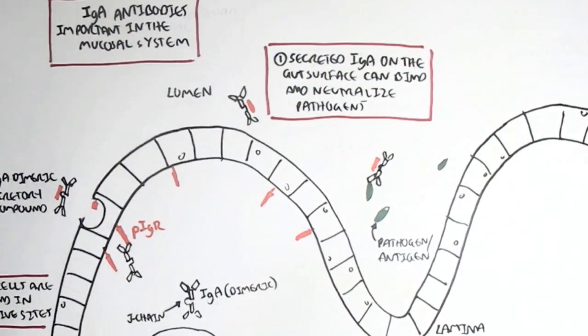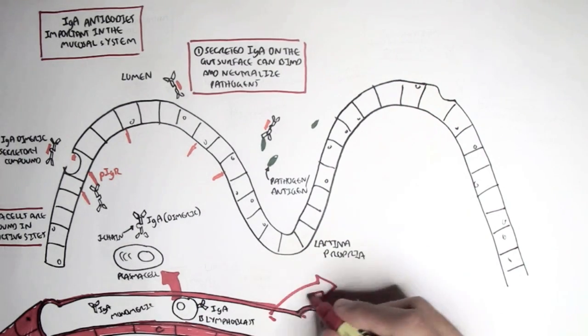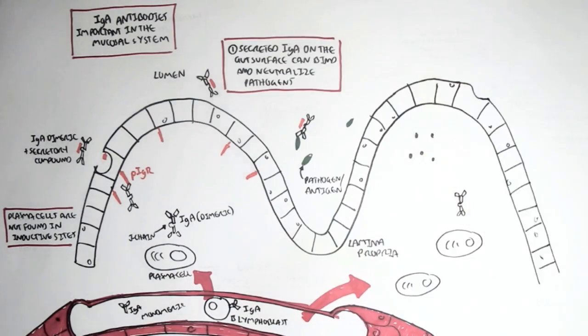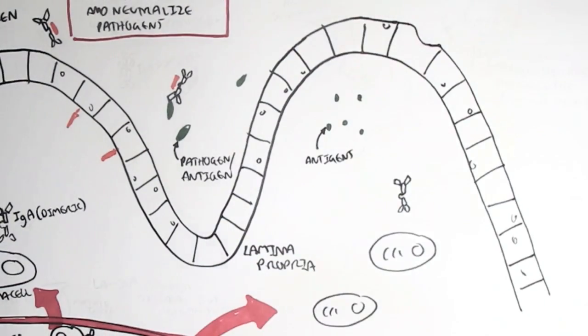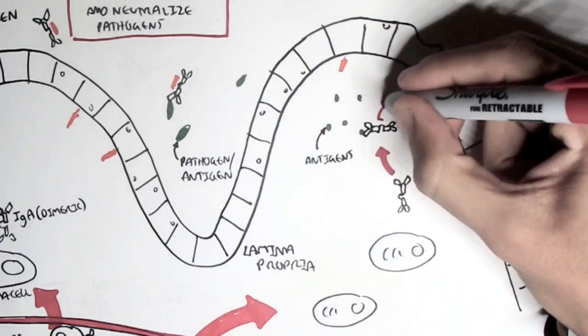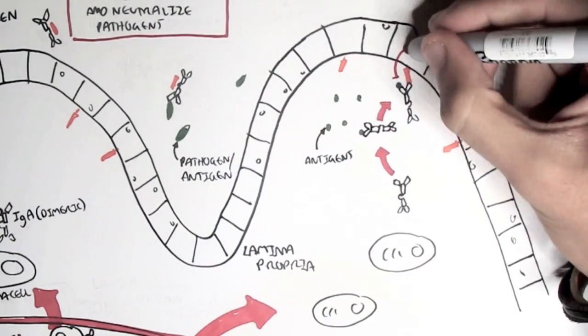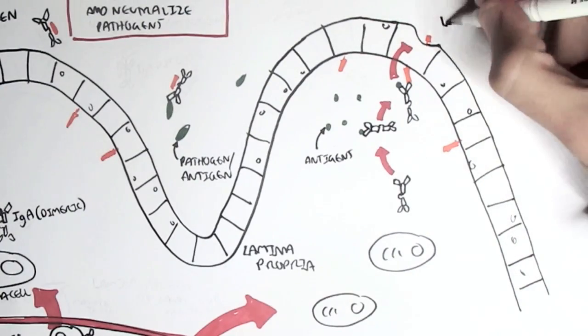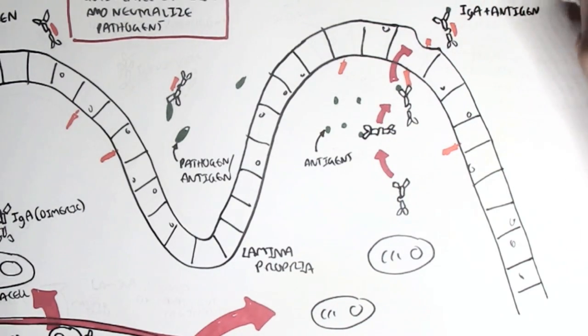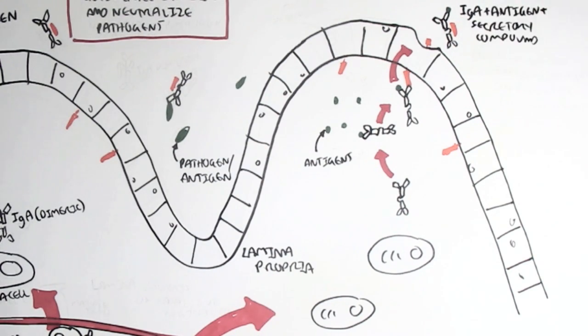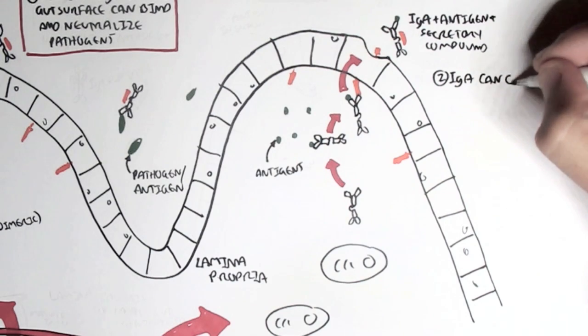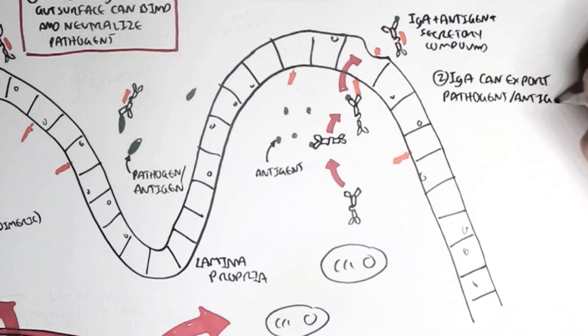Another thing antibodies can do: if the dimeric antibodies are secreted within the lamina propria and antigens are present already in the lamina propria, the dimeric IgA antibody can bind to these antigens present here, then bind on the PIGR receptor on the basal aspect of the cell, and then with the antigen be transported out into the lumen, taking up part of the PIGR receptor. So now we have the IgA plus the antigen and the secretory component. IgA can export pathogens and antigens out of the lamina propria into the lumen.